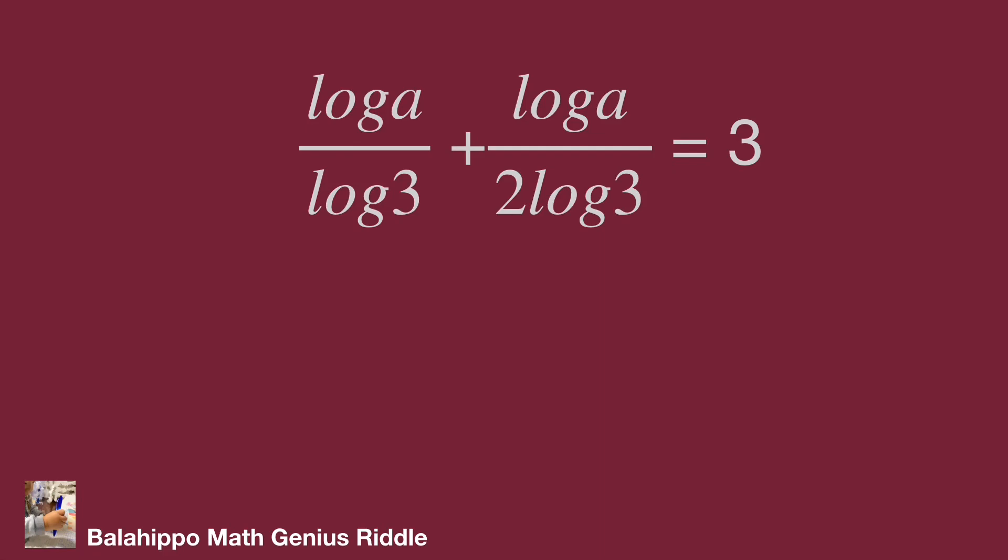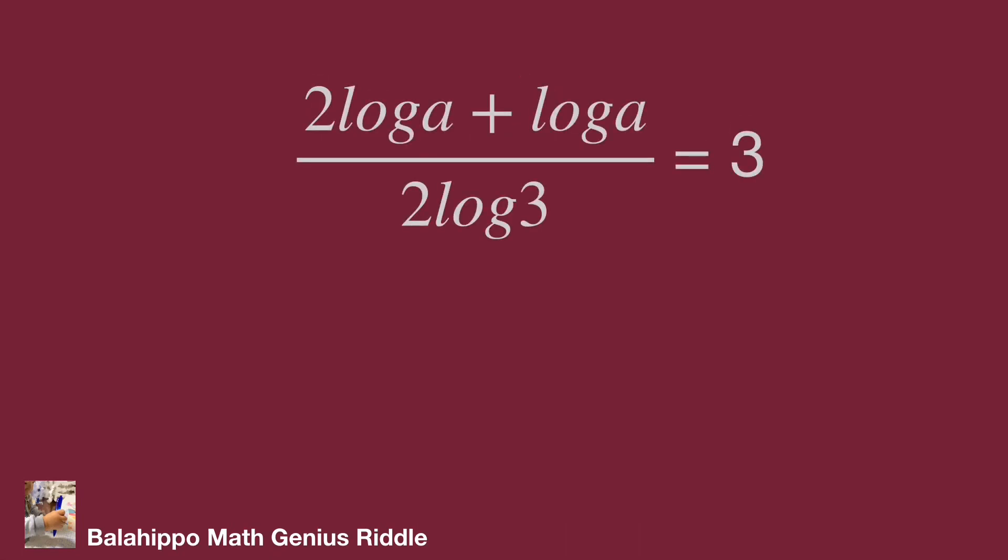Reduce the 2 fractions in the left side to become 1 fraction as 2 log A plus log A over 2 log 3 equal to 3.